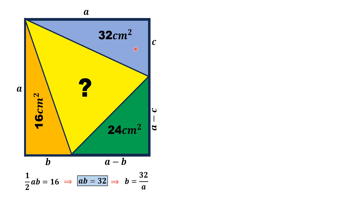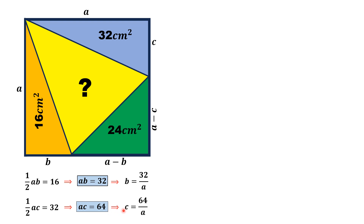Now if we focus on the blue triangle, the area is equal to half times a times C, which equals 32. Multiplying both sides by 2 we get aC = 64, and from here we can find the value of C in terms of a, which is equal to 64 over a.